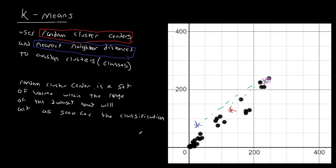So once it's done that, it's going to then do what we call iteration, where it's going to move the cluster centers based on the pixels — because each one of these points is a pixel — that it's assigned to that cluster, and that's going to repeat the process. So this is what it's doing: using random cluster centers and nearest neighbor distances to assign clusters.